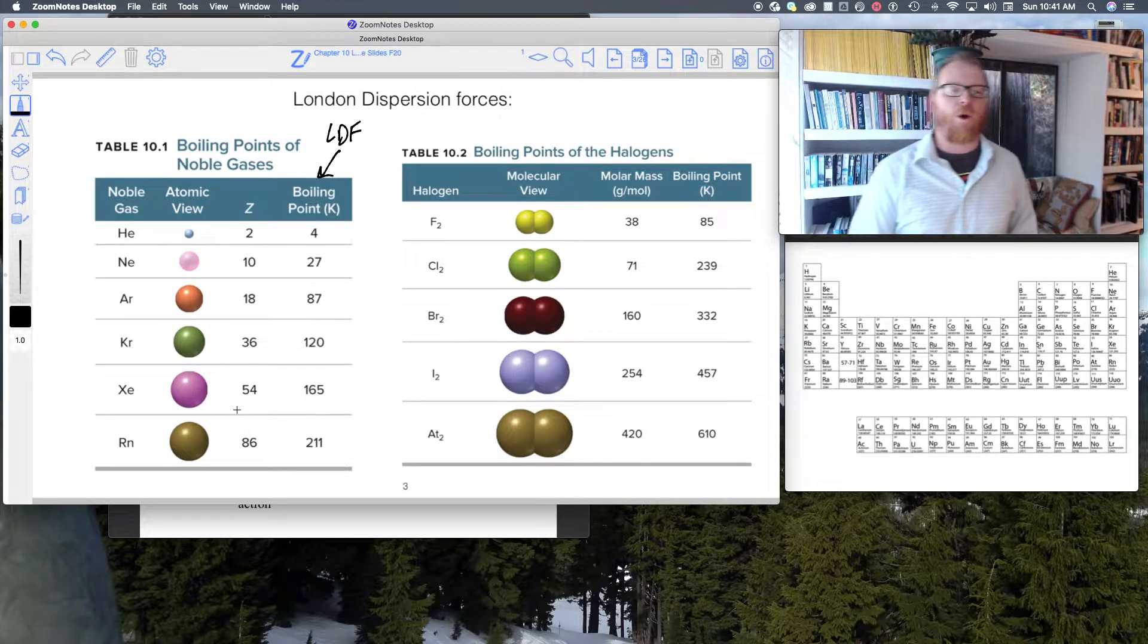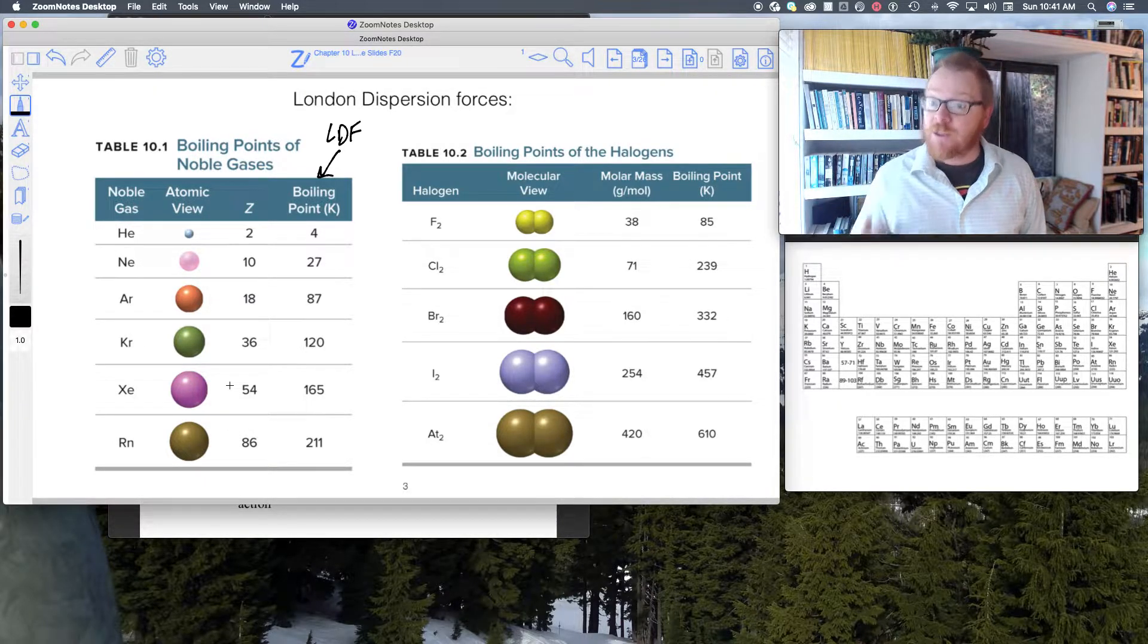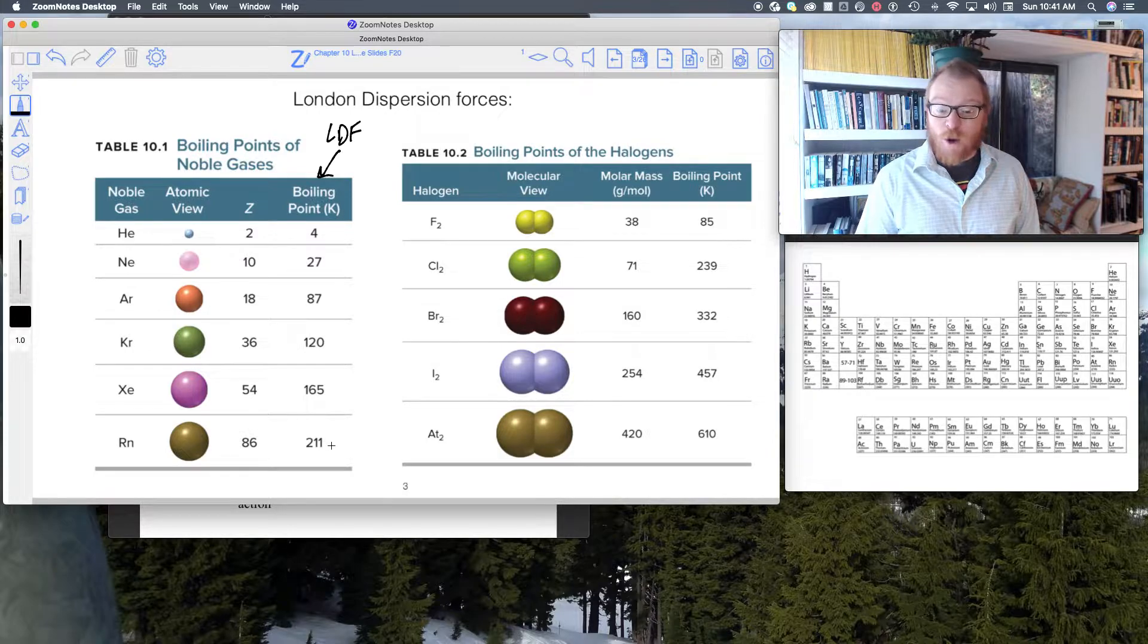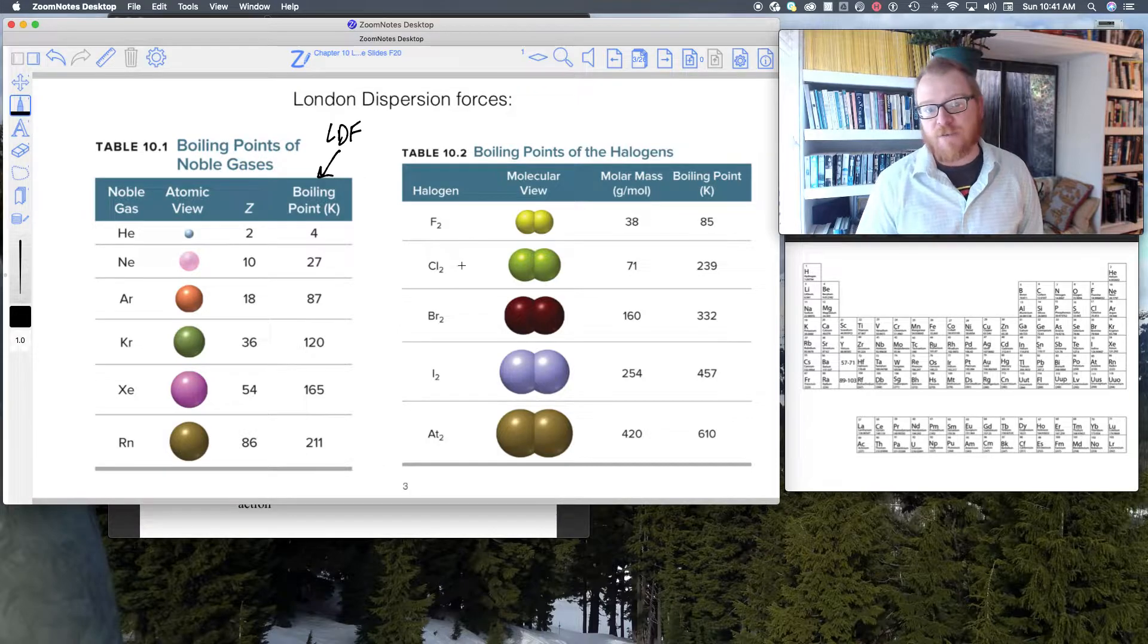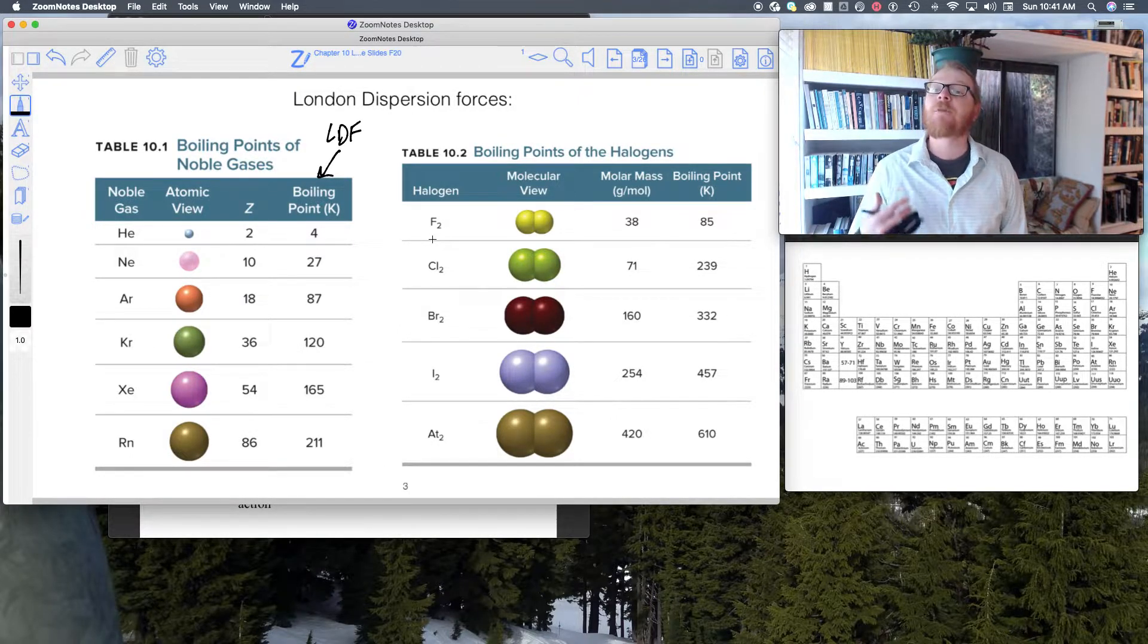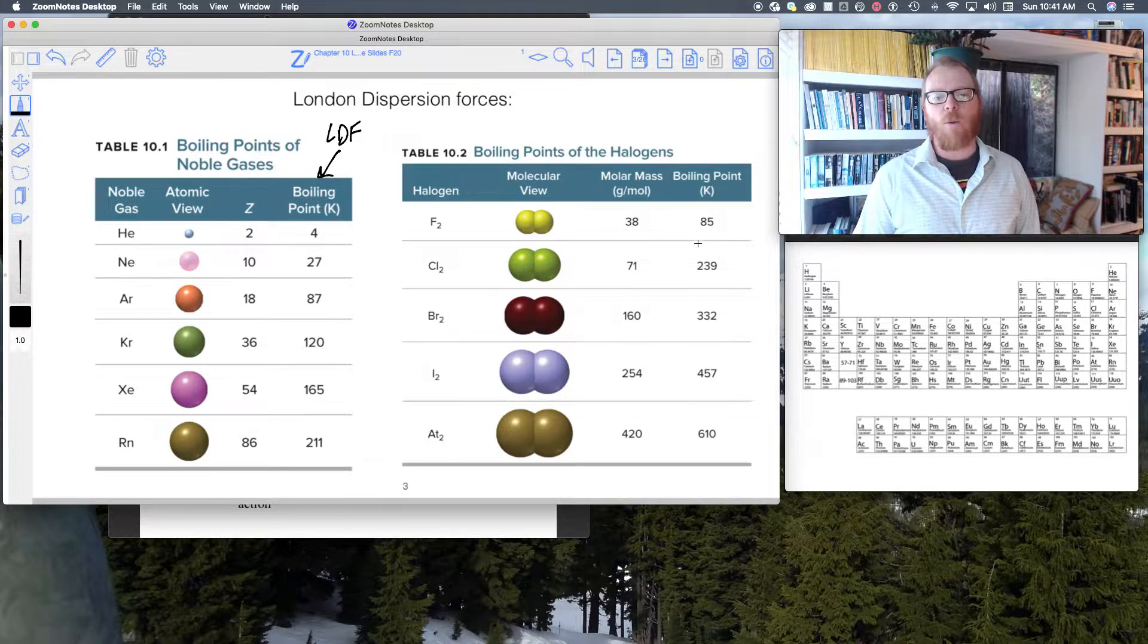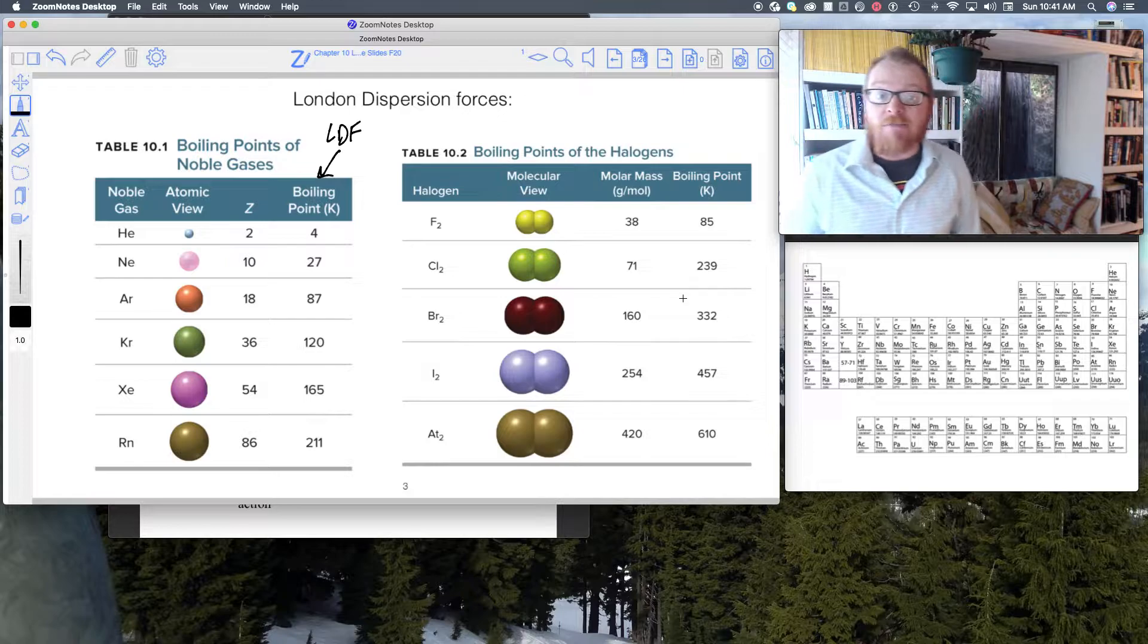Correspondingly, for a neutral atom, how many electrons it will have. Look, 54 electrons on xenon, right there at 54. This temporary induced dipole moment on xenon is quite noticeable. The fact that it boils at 165 kelvin, or even for radon 211 kelvin. Similarly, if we look at the halogens, even though these are not atoms but molecules, they are still non-polar molecules, so they exhibit London dispersion forces.